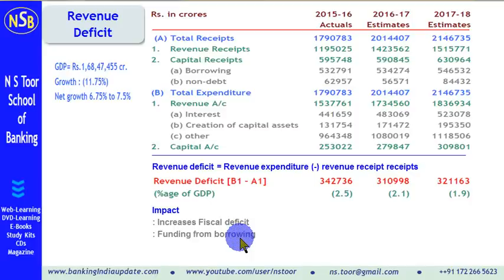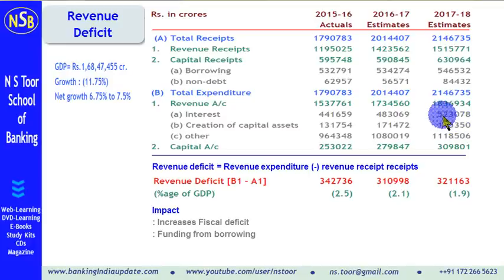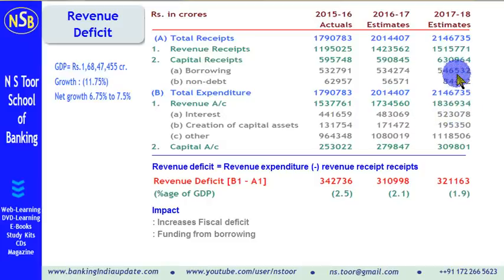Funding of fiscal deficit takes place from borrowing money. Hence, funding of revenue deficit also takes place from borrowing. Money is borrowed to fund interest payments, and if we see here, the entire amount of interest is being funded from borrowing — the amount of interest to be paid by the government and the amount of borrowing are nearly equal.